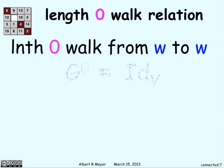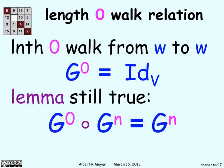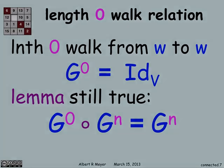The length zero walk relation just makes each vertex go back to itself, like it points back to itself. And the lemma is still true. G^0 composed with G^n is just G^n, which makes sense. Everything itself plus G^n just gives you G^n.